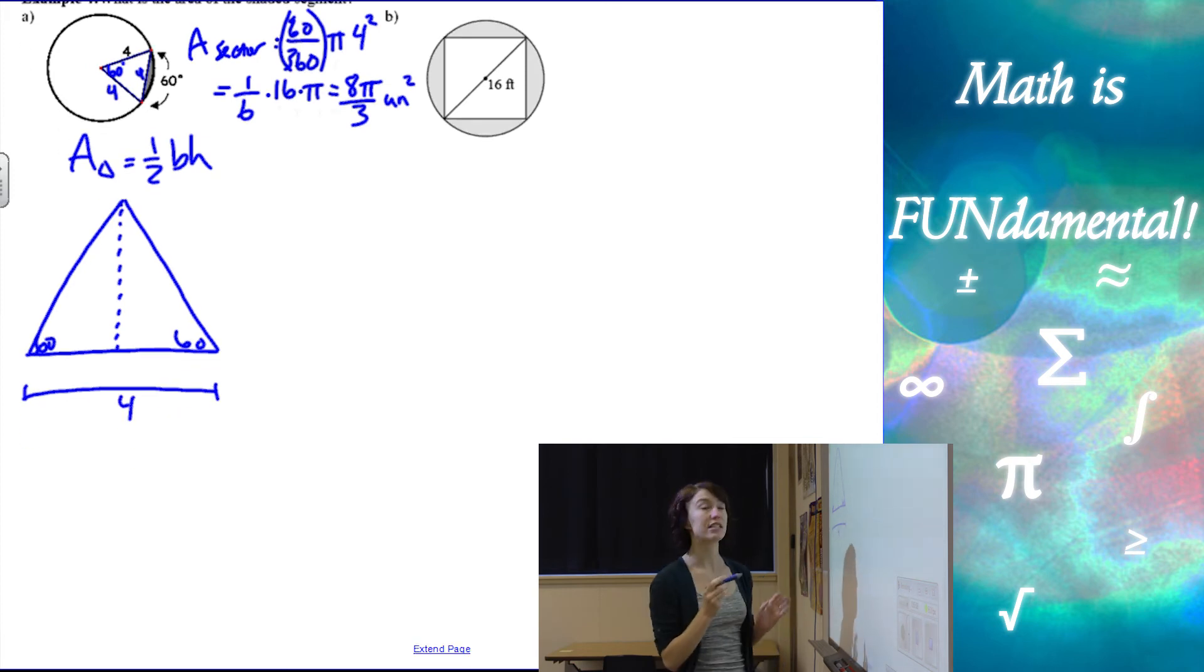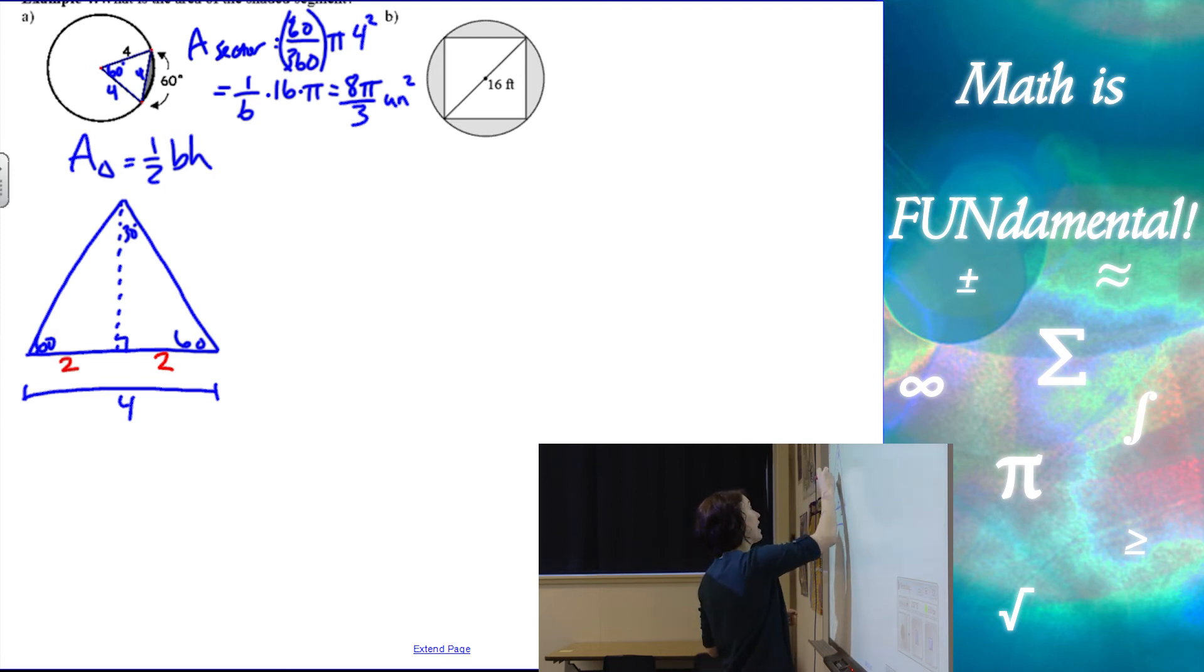I need to split that angle in half at the top, and this is going to become a 30, 60, 90 triangle. So now I can take my base and also split that in half to use my right triangle, and then I know that if that's 2, then this side, my height, is going to be 2 times the square root of 3. So I've used my 30, 60, 90 triangle to find the height of that triangle.